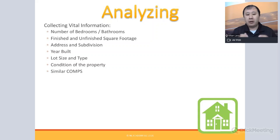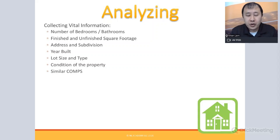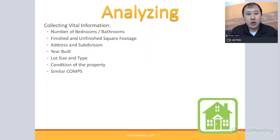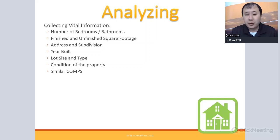To analyze a deal for wholesaling, you need key property information: number of bedrooms, bathrooms, total finished and unfinished square footage — all available from public tax records — plus the address and subdivision, since HOA quality can affect property value. You also need the year built, lot size, lot type, condition, and comparables. From there, you look at what has sold in the last six to twelve months to determine what the house will sell for once fixed up and renovated.